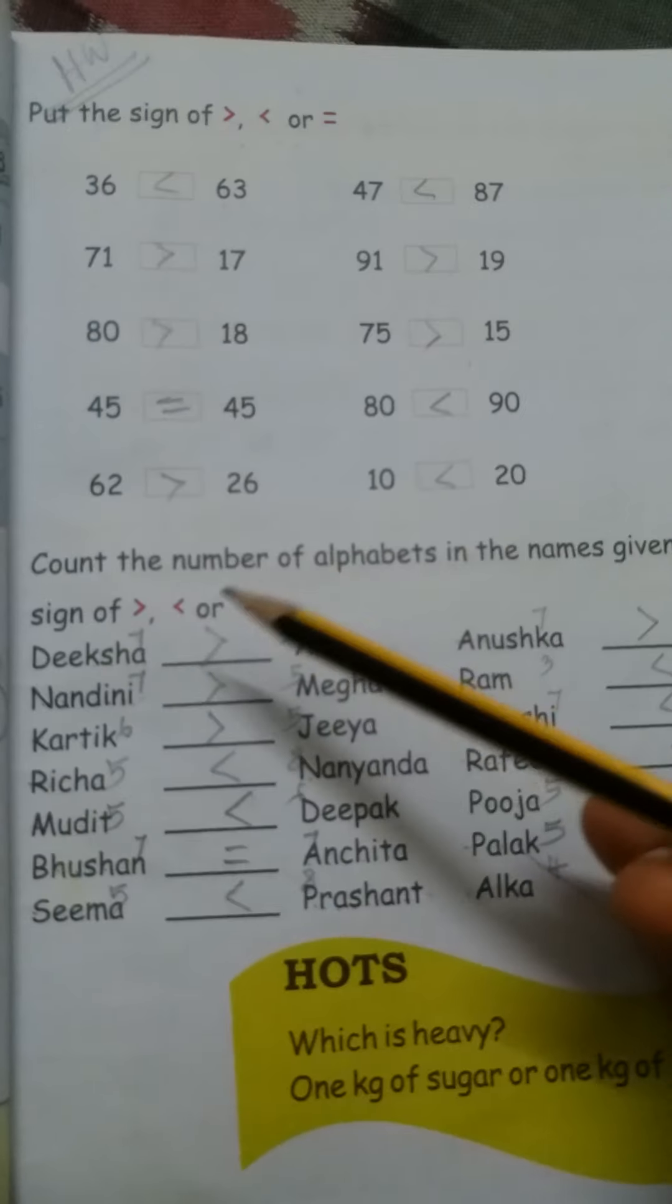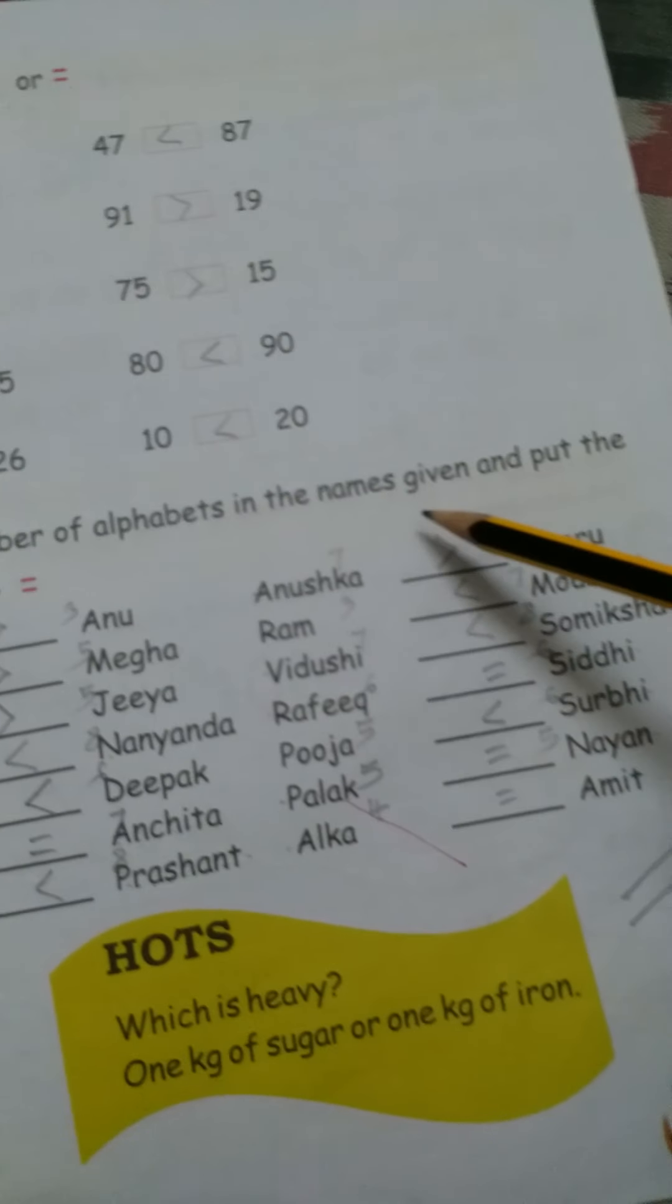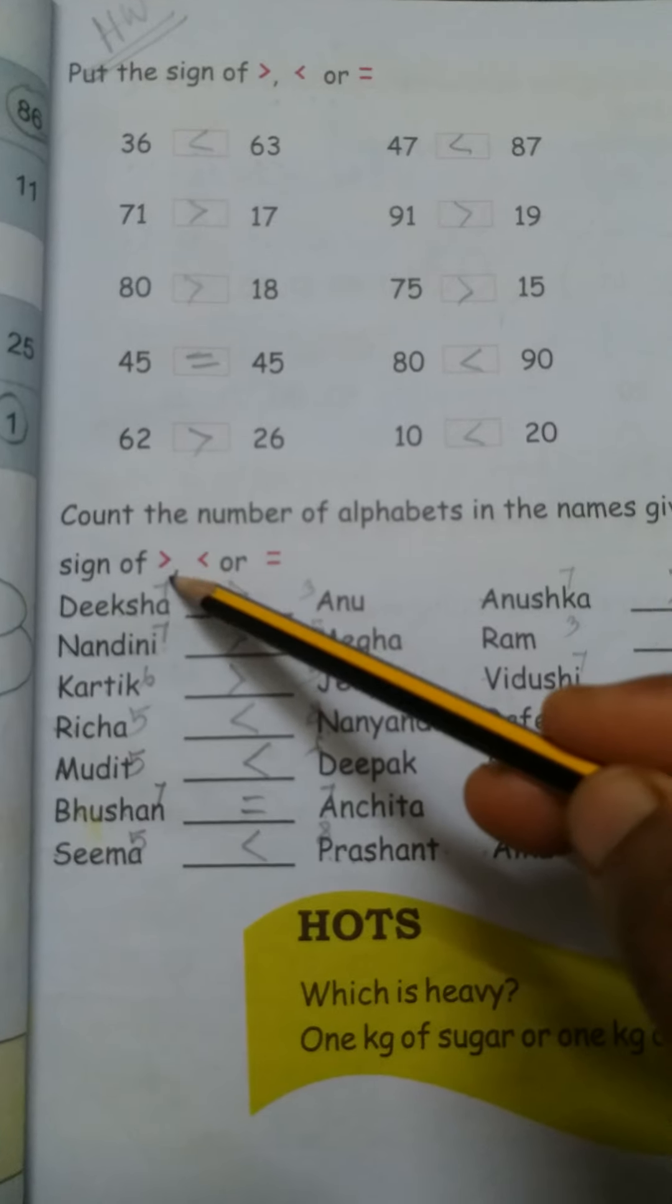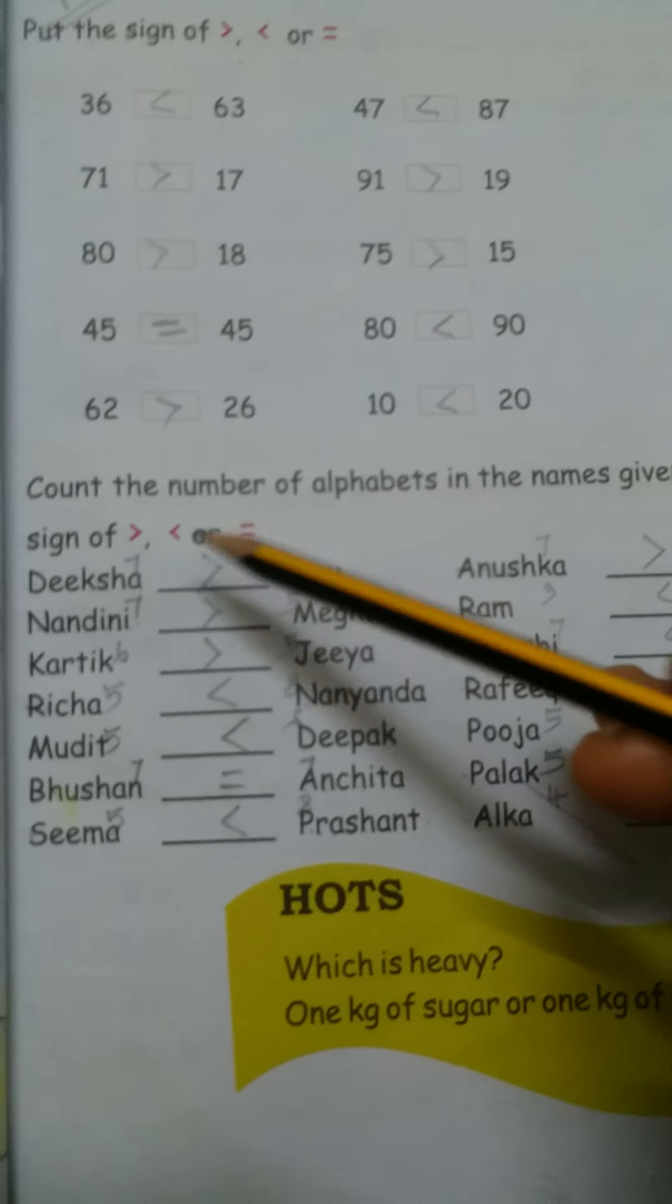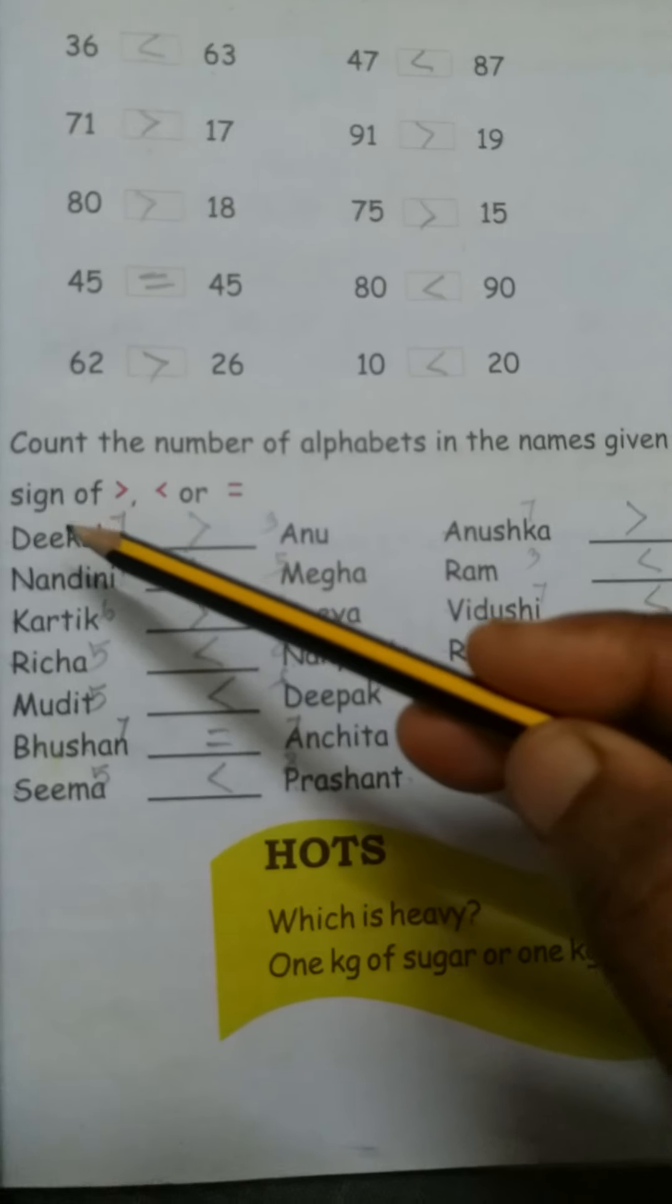And next, see, what is written here. Count the number of alphabets in the names given and put the sign of greater than, smaller than or equal to. How to do? First, we have to count this alphabet, means this portion first, this portion second.